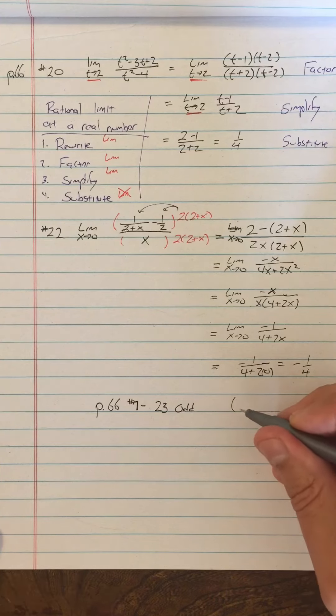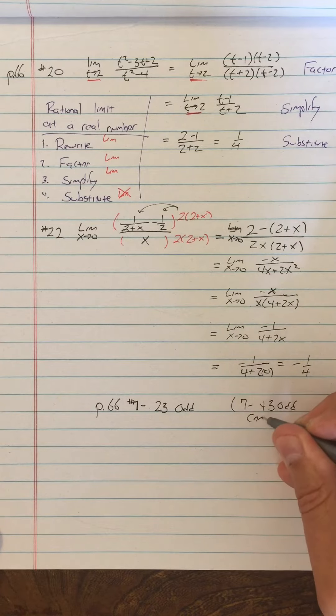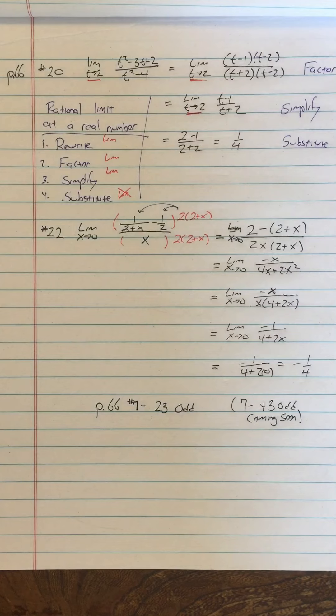So what we're headed for in this section is we want to do number 7 through 43 odd. That's going to be coming soon, but you can take a stab at some of those, but I think number 25 and 27 are not going to be obvious without some kind of explanation.